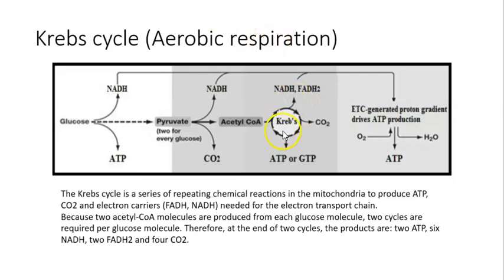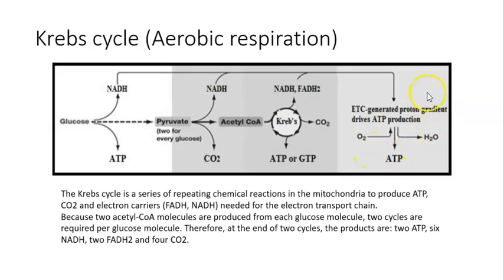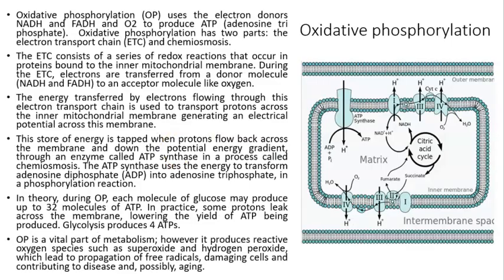The Krebs cycle produces NADH and FADH, which are electron transporters necessary for oxidative phosphorylation. Oxidative phosphorylation uses the electron donors NADH and FADH and oxygen to produce ATP.